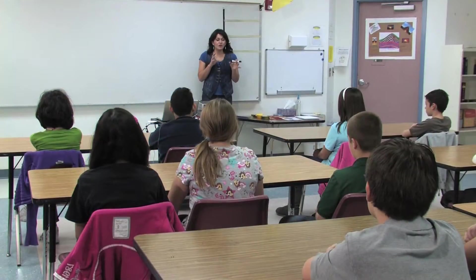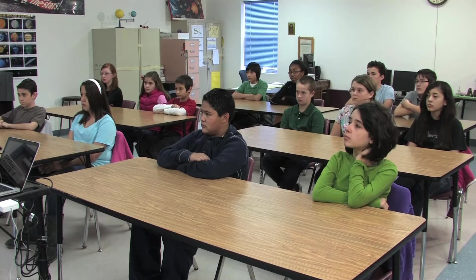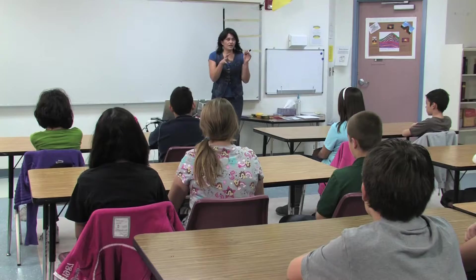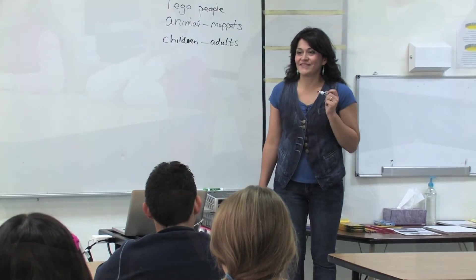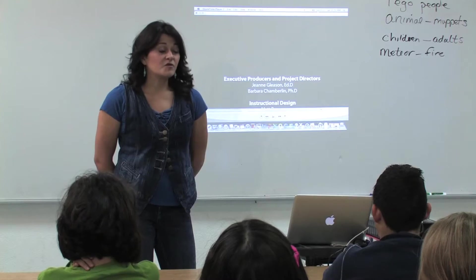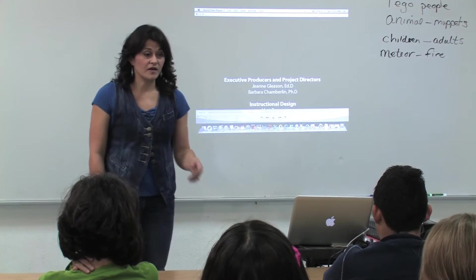Give me an example of something that you have seen that is either shrunk down or made really, really big. Students respond: Lego people. Animal in the Muppet movie. Children compared to adults. A meteor coming towards the Earth. Scale Ella was making things bigger and smaller, right?